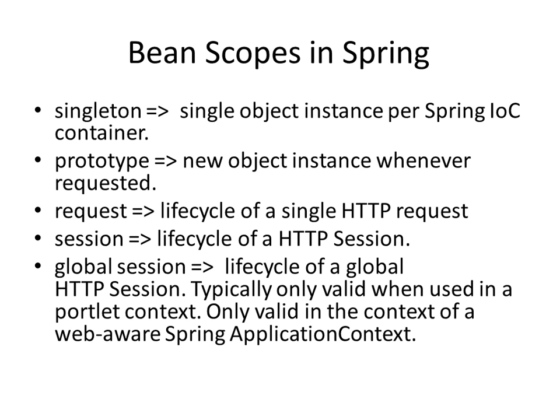Every bean comes with five different kinds of scopes. One is singleton — you will have a single object per IoC container. Prototype means it will create a new object instance whenever you request a bean. The last three are for web applications: request scope means the life cycle of the bean is that of a single HTTP request; session scope is for the life cycle of an HTTP session; and global session is generally used with portlets and is only valid in the context of a web-aware Spring application context.